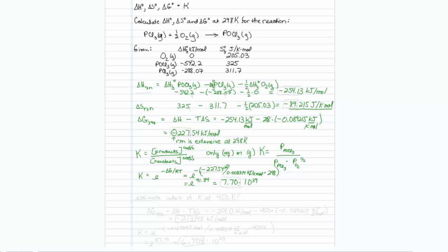Our last question asks us, can we estimate the value of K at a different temperature, say 450 degrees Kelvin? Certainly. First we'll have to find out delta G though, at that temperature.